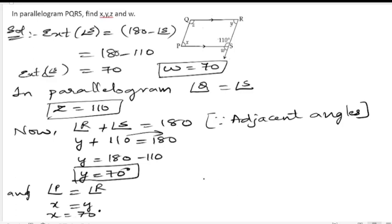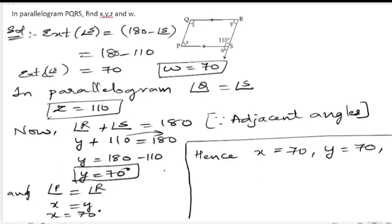Therefore, we got all the angles. Hence, x is equals to 70, y is equals to 70, z is equals to 110, and w is equals to 70. We got all the angles.